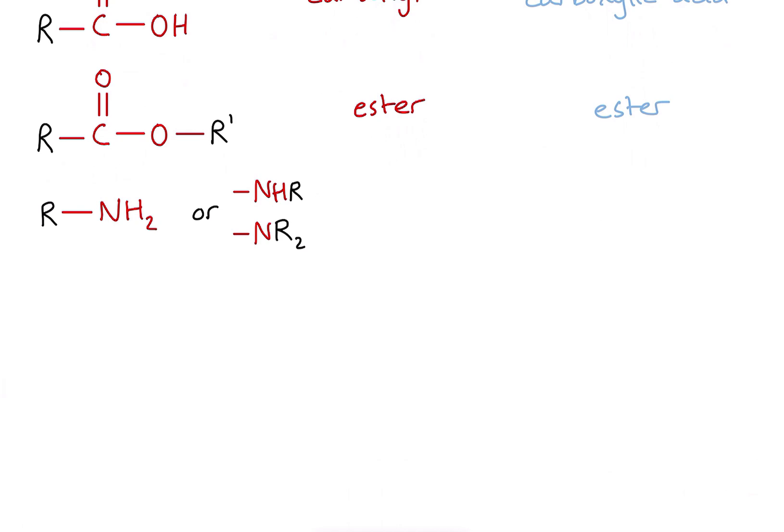Let's look at some molecules with nitrogen. At the end of my carbon chain, I've got an NH₂ group. Those hydrogens could actually be replaced by other carbon-containing sections of the molecule, and these are known as amino functional groups — it could have two hydrogens, one hydrogen and an R group, or even two R groups. We can distinguish between these different options: the first is a primary amino group or primary amine; if the nitrogen is bonded to two carbons, it would be a secondary amine; and if it's bonded to three carbons in total, it would be a tertiary amine.